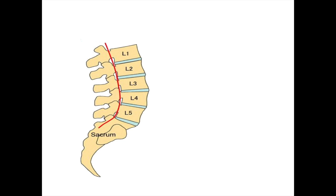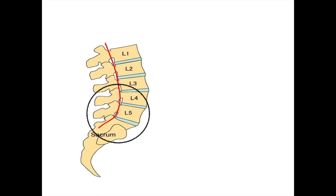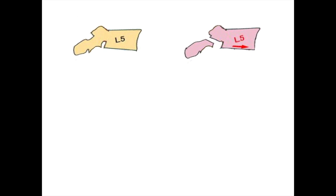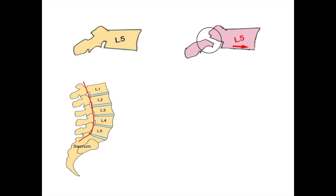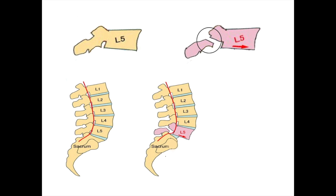Now we will zoom in on L5. This vertebra has a tail-like structure in the first image, but the same tail is broken in the second image. This is exactly what happens in spondylolisthesis: the pars interarticularis breaks and the vertebra slips onto the one below it.